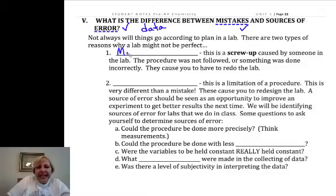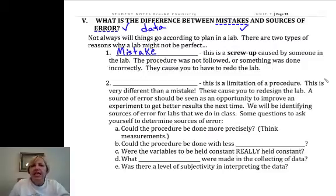Now, a mistake is a screw-up. If you did a mistake, you spilt something, you didn't follow the procedure properly, your neighbor spit in your beaker, I don't know, but it's a screw-up caused by somebody in the lab. One way you can tell if it's a mistake is if it's a screw-up, you simply have to redo the lab so that you don't make the same mistake again. So in the lab, if you've made a mistake, you may have to go back and redo the lab.